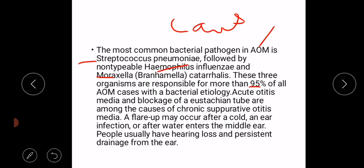Acute suppurative otitis media and blockage of the Eustachian tube are among the causes of chronic suppurative otitis media. The infection travels from the Eustachian tube to the middle ear. The infection can also travel from the external auditory canal to the middle ear if the tympanic membrane is perforated. A flare-up may occur after a cold, ear infection, or after water enters the middle ear.